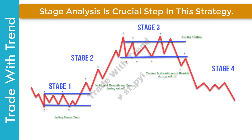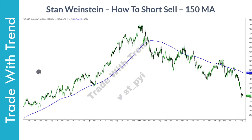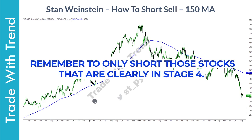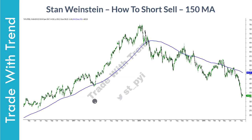Once stage analysis is complete, you can then apply rules from the first and current part to identify trading opportunities in the market. The 150-period moving average on a daily timeframe chart is used to define the trend of price and to determine ideal entry points to short sell. Stan Weinstein recommends to only short sell those stocks that are clearly in stage four of the Wyckoff price cycle, where price moves lower with momentum.